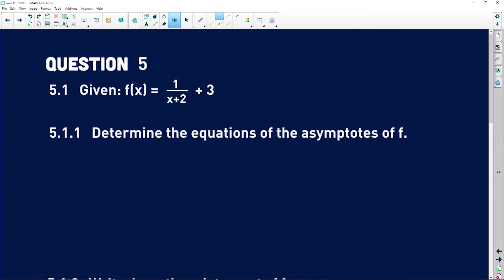Question five is also functions, but we're going to start looking at hyperbolas and parabolas and all of those things. So let's look at 5.1. It says, given that f(x) is equal to 1 over x plus 2 plus 3, 5.1.1 says determine the equations of the asymptotes of f.